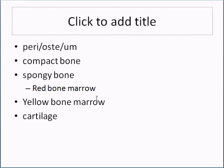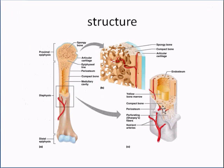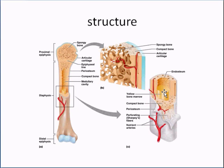On the very outside of a bone you have the periosteum, which is a thin membrane that covers the actual bone. Once you cut past the periosteum you get into the compact bone — pretty much what you think of when you think of a bone. Beyond the compact bone you get into the spongy bone on the inside.